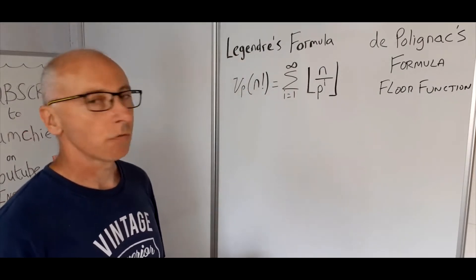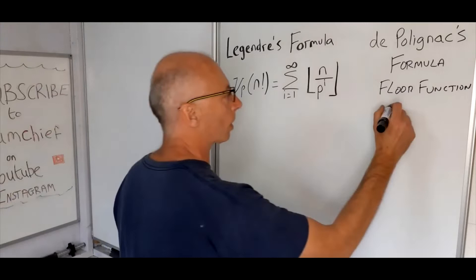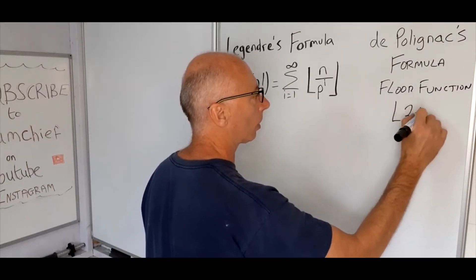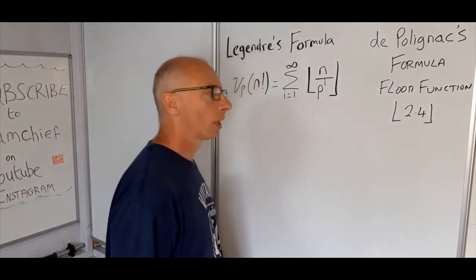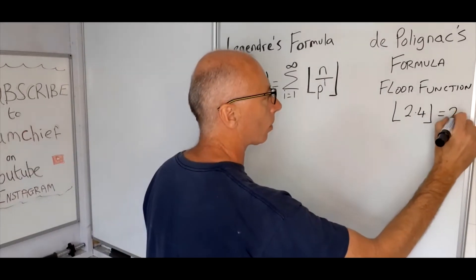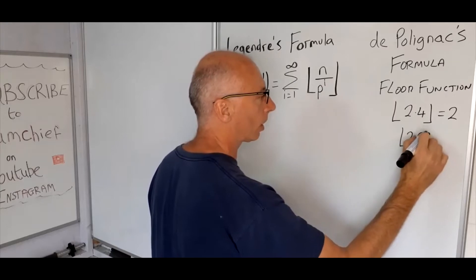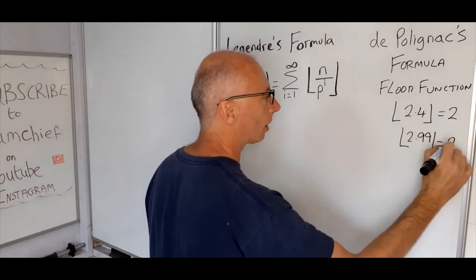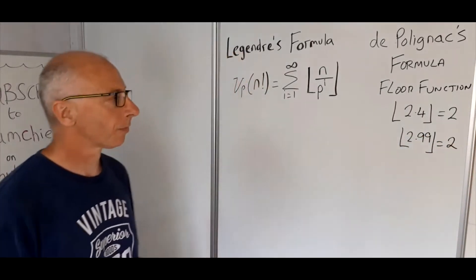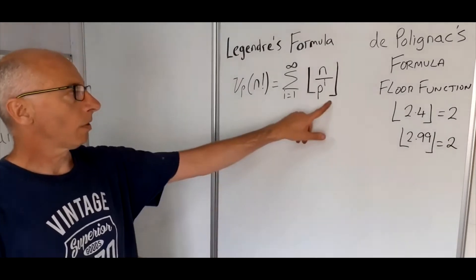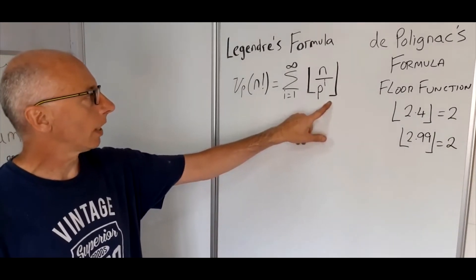Floor function basically gives us a value of any number, any real number rounded down. So for example, the floor value of 2.4 equals 2. Similarly, the floor value of 2.99 still equals 2. So that's going to be very important when we're calculating this formula here.